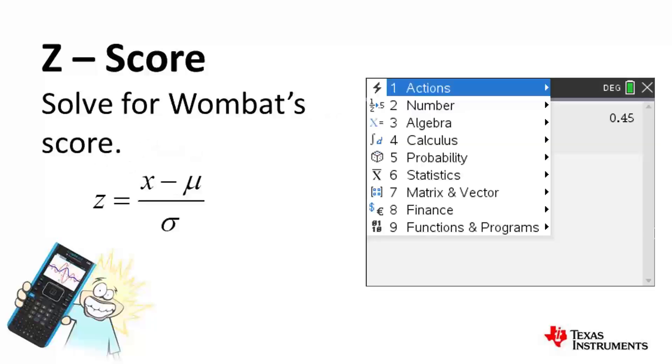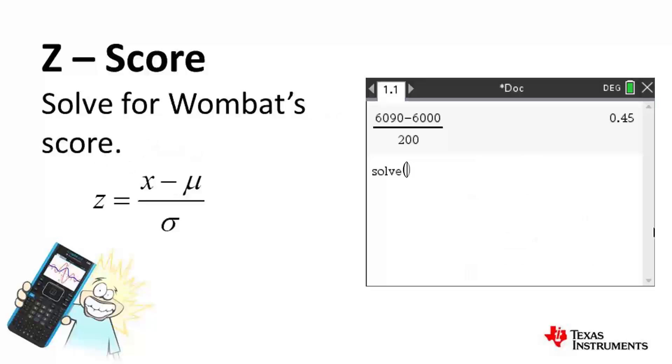Next, we need to work out Wombat's score, or call it X. We know that the current average is 7,000, and that the standard deviation is 250. So we can solve this problem for X. So Wombat needs to score at least 7,112 points to beat Alex's original score.